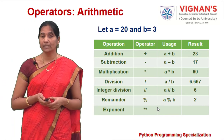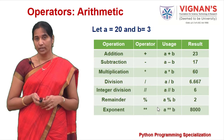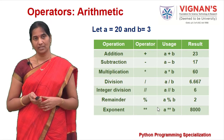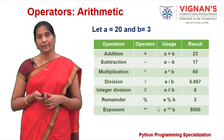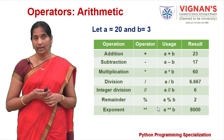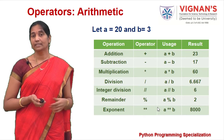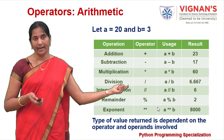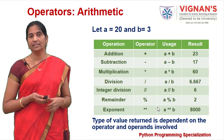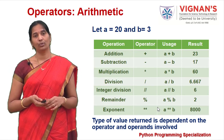Two asterisks denote exponentiation — 20 to the power of 3 equals 8000. The type of result depends on the operand types. For addition, subtraction, and multiplication the operands are integers so results are integers, whereas division always returns a floating point value even if both operands are integers.